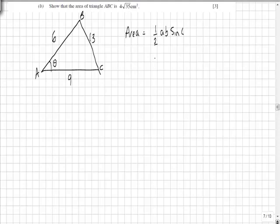Now we have A and B are 6 and 9, and angle theta we worked out in the previous question that cos theta was in fact minus 13 over 27.